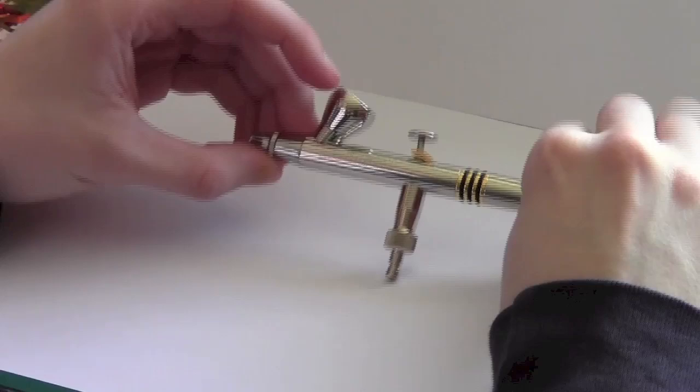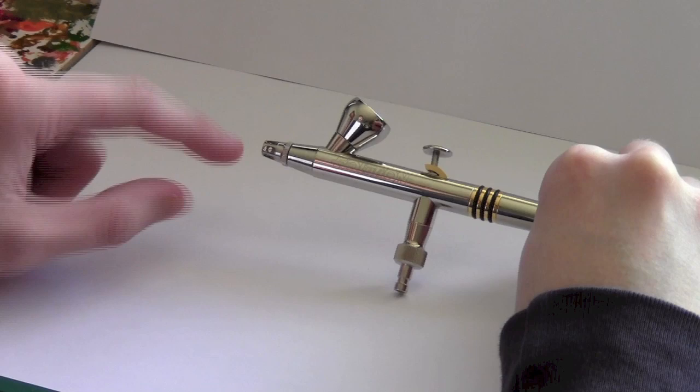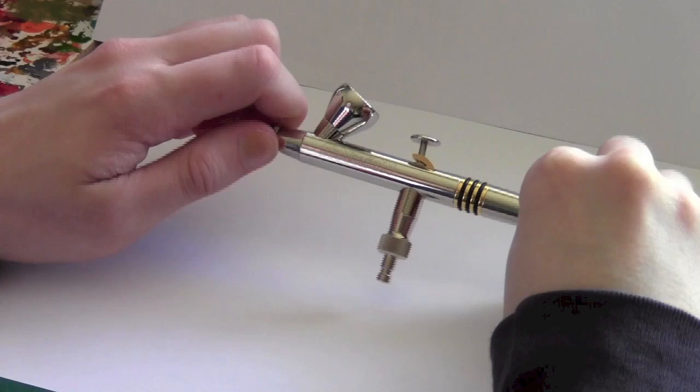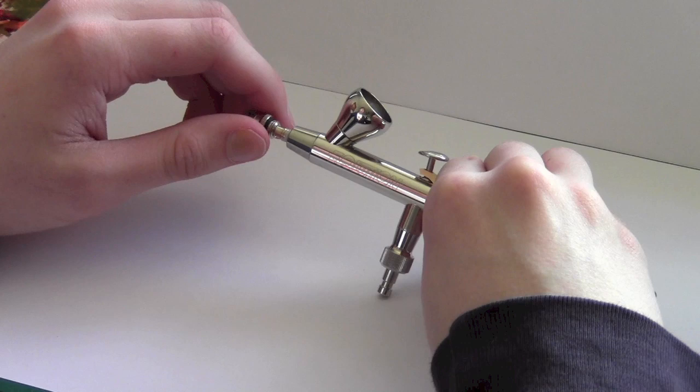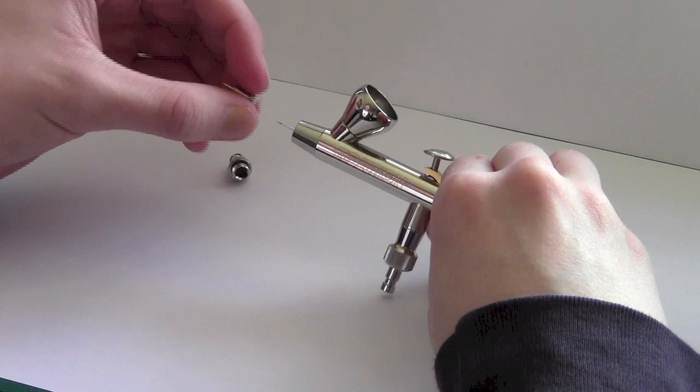So parts, here on the end will have the needle cap. This just protects the needle from getting bent. And just below this here, which can screw off, is the airhead. So we're going to just go ahead and screw this off. Now, the airhead is the part that just goes over the edge of the needle and also houses the nozzle or sometimes called the needle tip.